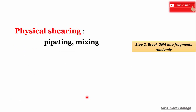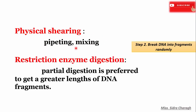After genomic DNA isolation, we break DNA fragments randomly. The first method is physical shearing, where we pipette the genomic DNA repeatedly and mix it continuously, resulting in breaking the DNA into fragments. The other method is restriction enzyme digestion, where we use a restriction enzyme that does partial digestion of DNA, and we get greater lengths of DNA fragment.